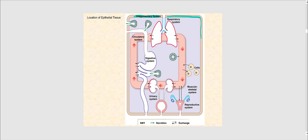Our respiratory tract is lined with epithelial tissue facing the lumen of the respiratory tract. Our lungs are also lined with epithelial tissue. The circulatory system — blood vessels — are lined with epithelial tissue as well, with the lumen of the blood vessel containing blood, and the epithelial tissue facing that lumen.